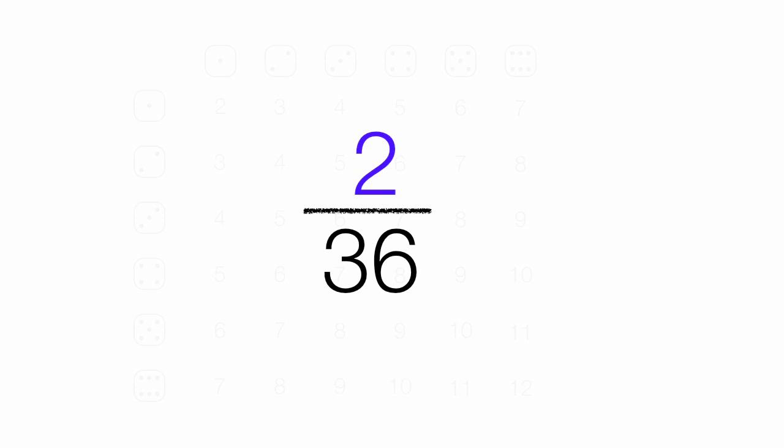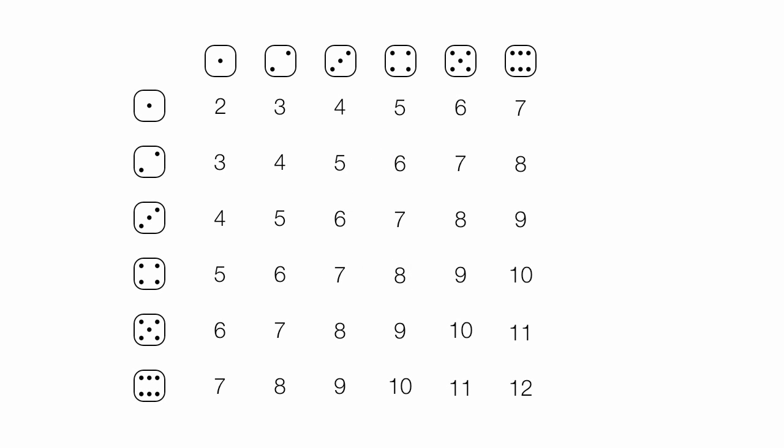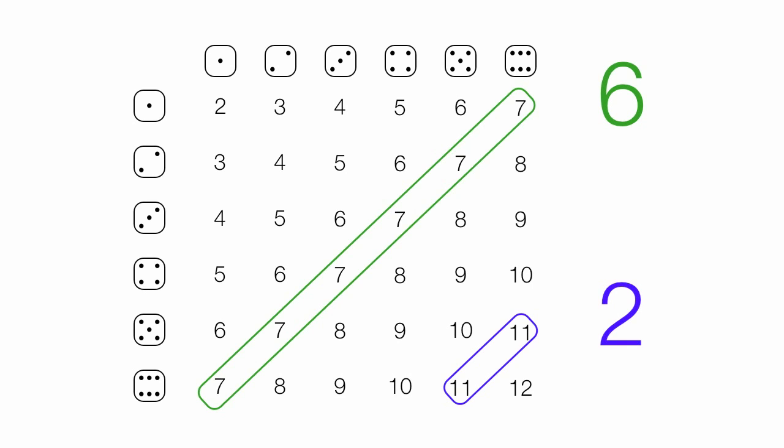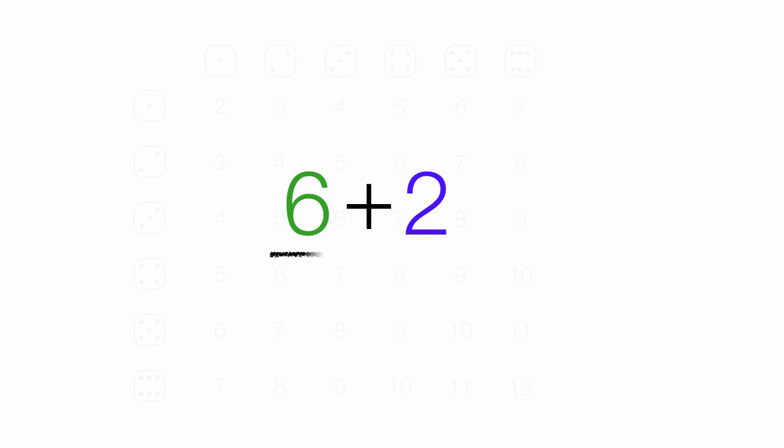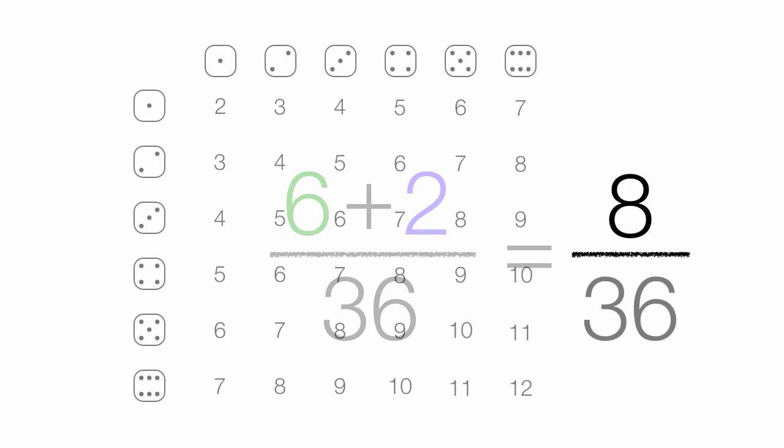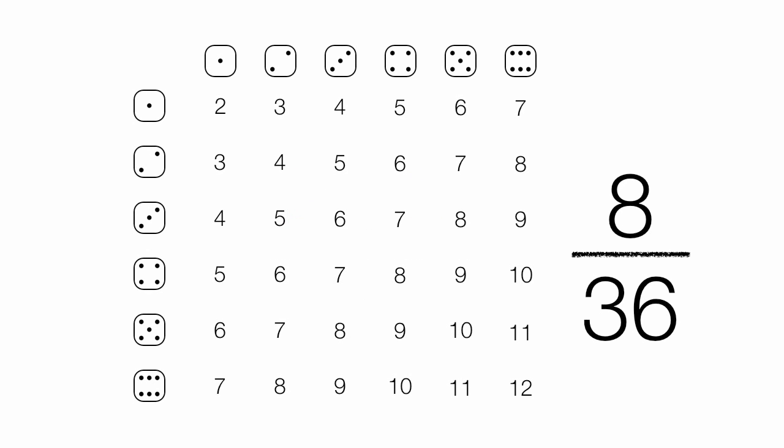The chances of rolling a 7 or an 11 is simply 6 plus 2. So I just take 6 plus 2 out of 36 possible outcomes, or 8 out of 36 possible outcomes. And that's the chance of rolling a 7 or an 11.